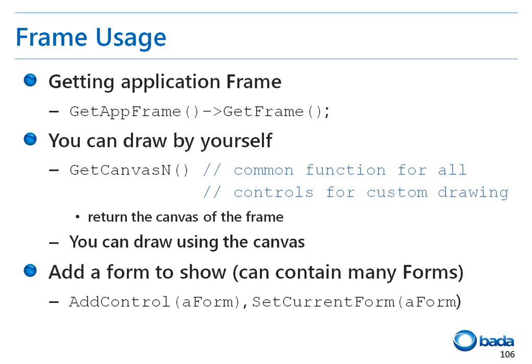To use a frame, you have to get the frame from the application. To do this, you can get the appFrame object by calling the getAppFrame function of the application. You can get a frame from this object by calling the getFrame function. Finally, you can get the frame's canvas object by calling the getCanvasN function, which can be used to draw an object directly on the frame. In most cases, a frame is used to manage a form. You can add a form to a frame using the addControl function. The form currently being displayed on the screen can be set from among multiple forms using the setCurrentForm function.